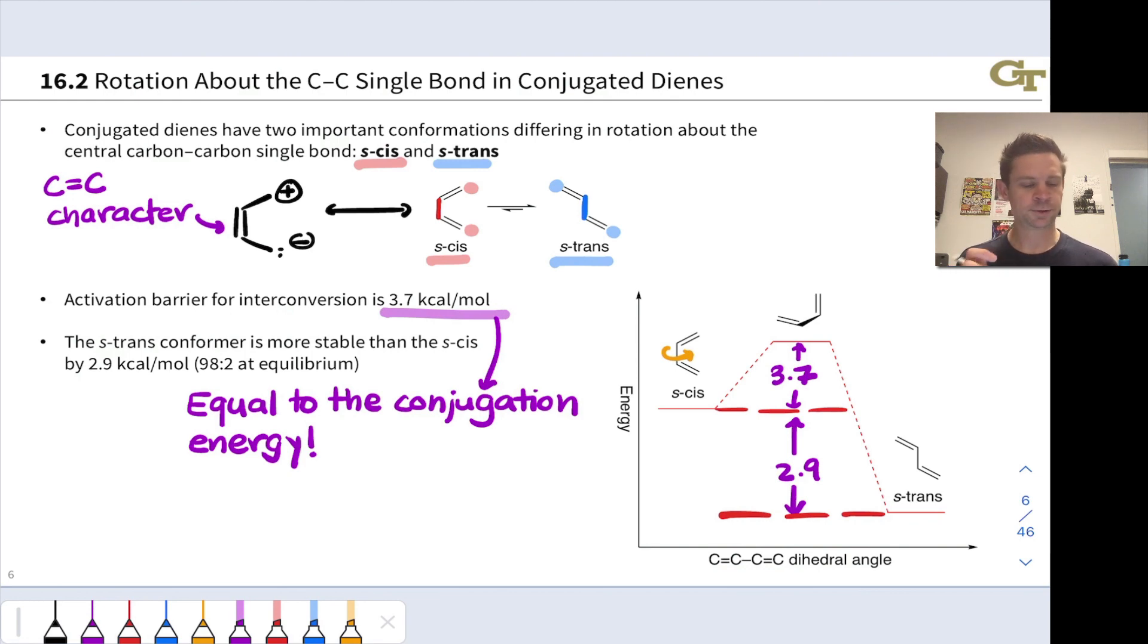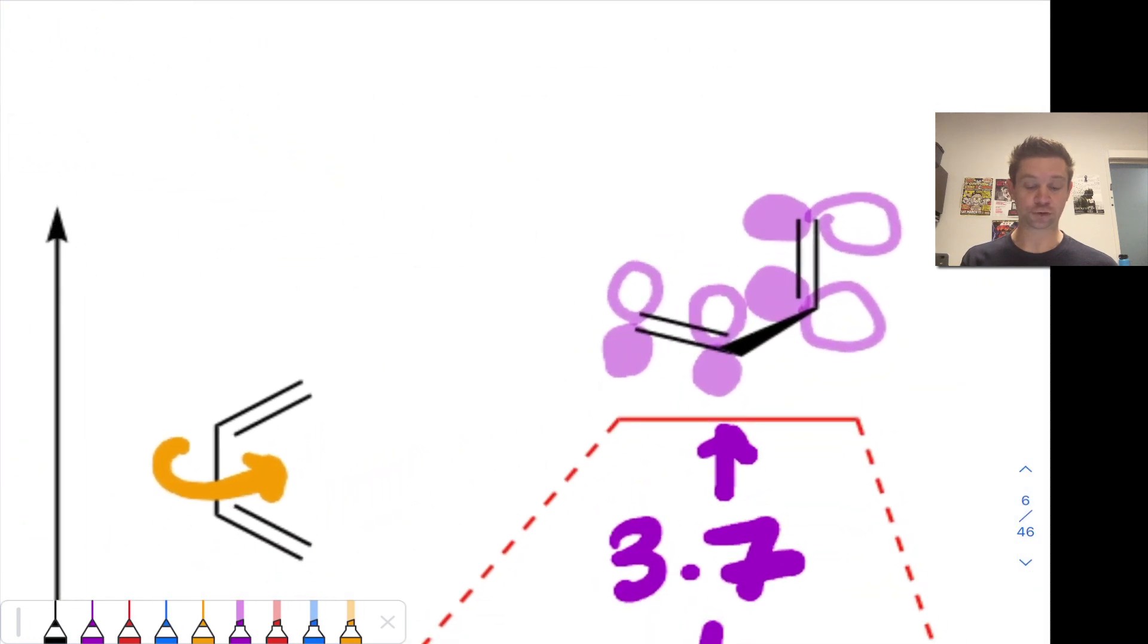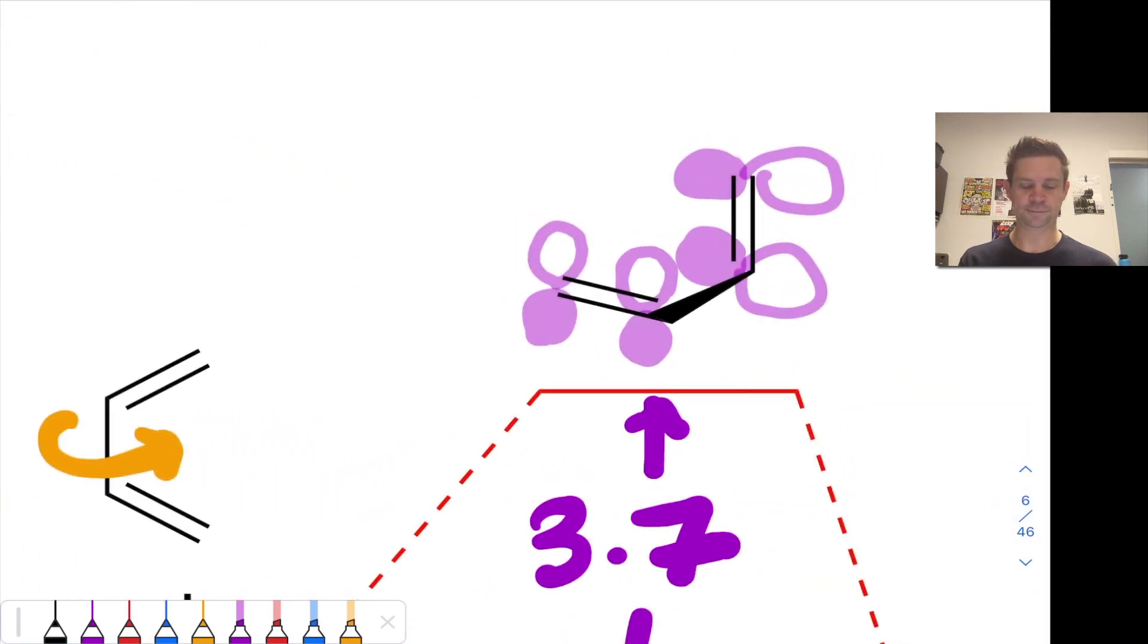Rotation about that carbon-carbon single bond destroys conjugation, destroys electron delocalization. What it does is it brings the p orbitals associated with one of the double bonds out of sign-on overlap with the p orbitals of the other double bond. These are now at right angles to each other in the transition state for this rotation.